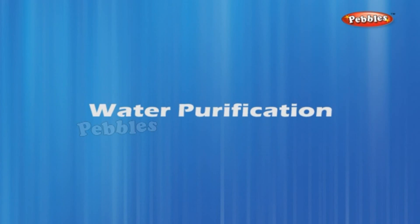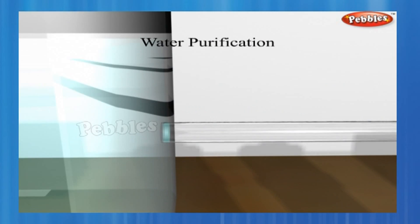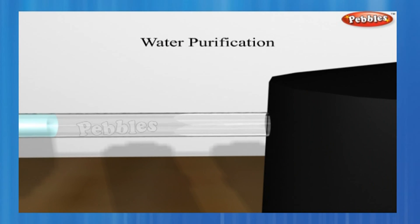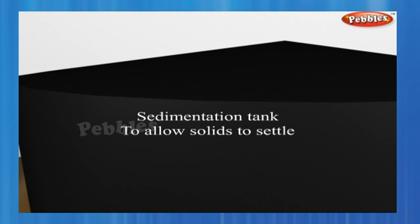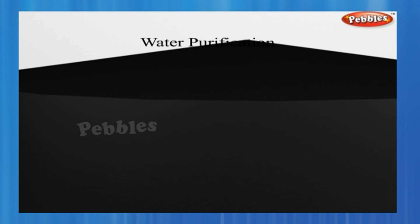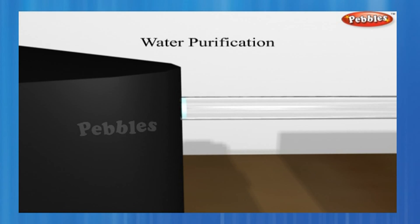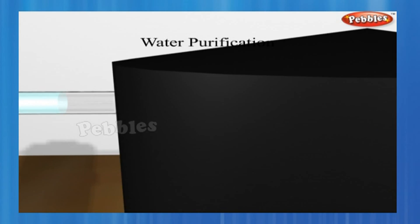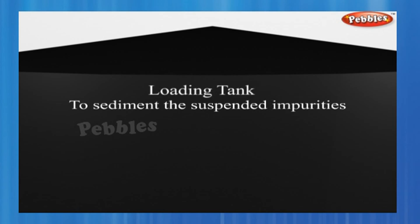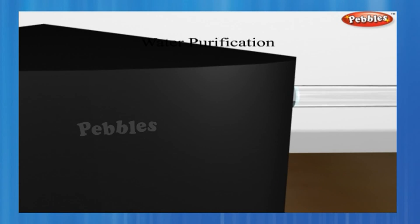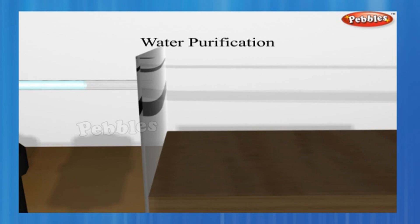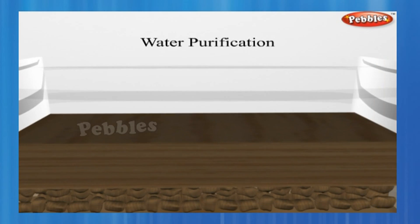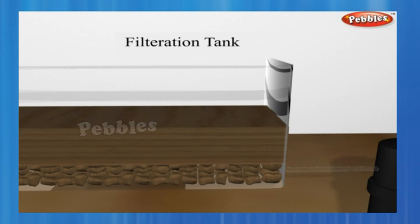In cities, drinking water is supplied from waterworks. A flow diagram of a typical waterworks is shown, from which the various processes involved in the purification of water can be visibly inferred.